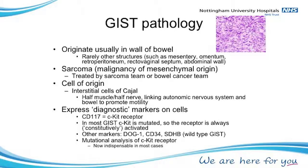The cells of origin have been described as the interstitial cells of Cajal — named after a Spanish pathologist. They are half muscle, half nerve, and they link the nervous system that controls bowel function and heart rate with the bowel, promoting motility.